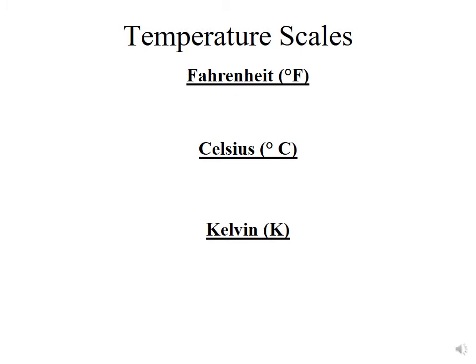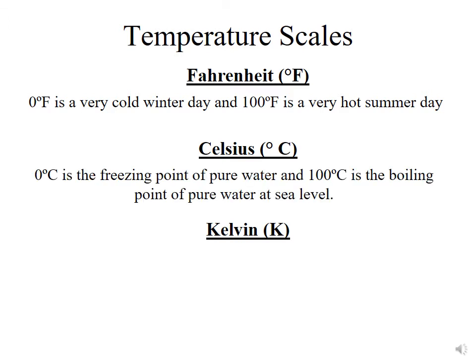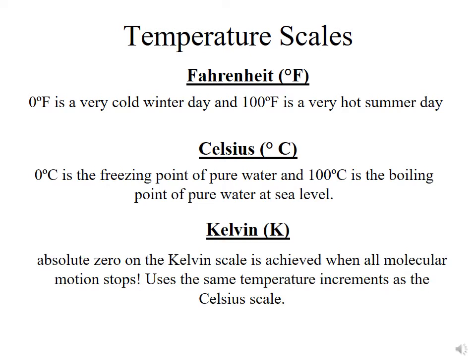If we look at our traditional temperature scales, in the United States we are most familiar with the Fahrenheit, the rest of the world uses the Celsius, and the scientific community uses the Kelvin scale. The Fahrenheit scale was set as 0 degrees Fahrenheit being a very cold winter day in Europe, and 100 being a very hot summer day in Europe. Whereas Celsius set 0 degrees C as the freezing point of pure water, and 100 degrees Celsius as the boiling point of pure water. Kelvin simply adjusts the Celsius temperature scale so that when the temperature in degrees Kelvin gets to 0, that signifies that all molecular motion has stopped, and that is what we refer to as absolute zero.